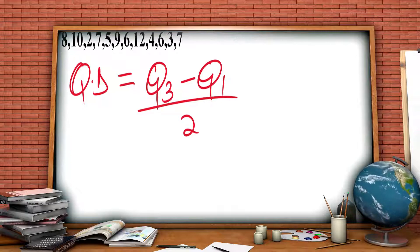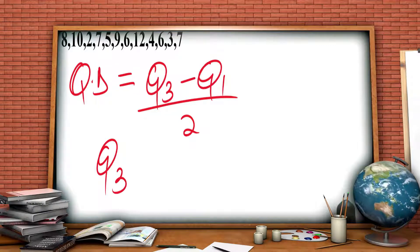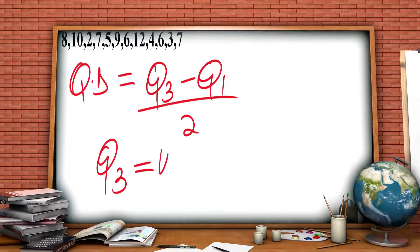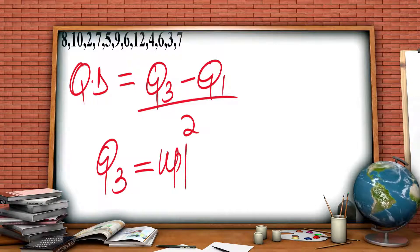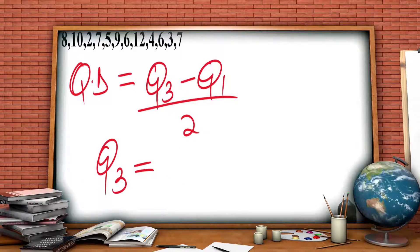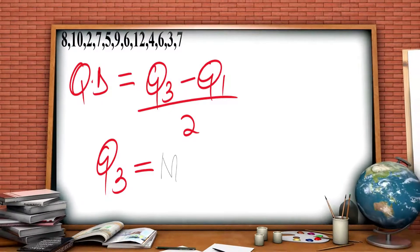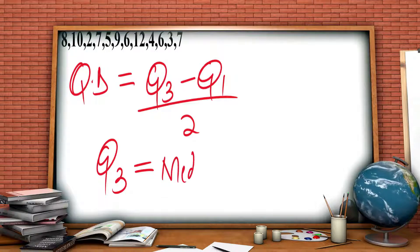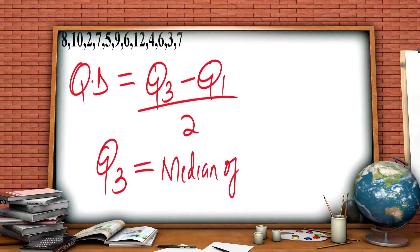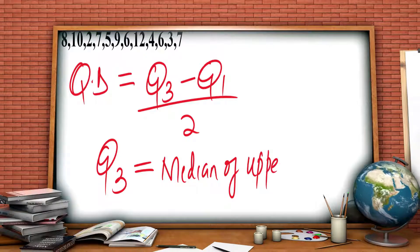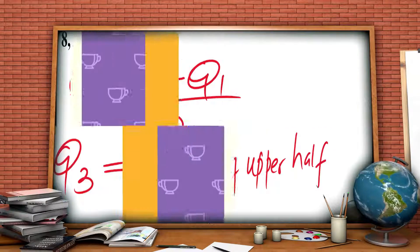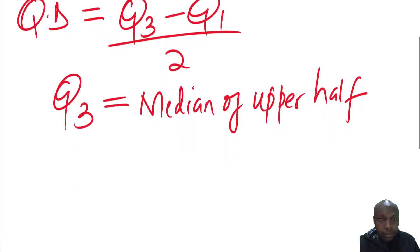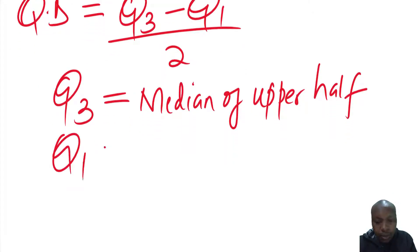And in this case, Q3 is the upper quartile. This is the median of the upper quartile. So median, median of upper half. Then you have Q1 is the median of the lower half.